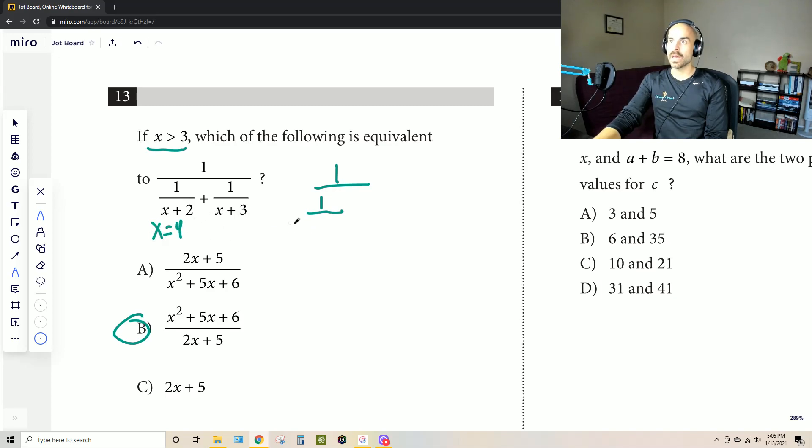Then we have 1 over 6 plus 1 over 7. And let's see, that's 7 times 6. That's 42. And so you have 1. What we see is that we're dividing 1 by a small number here.